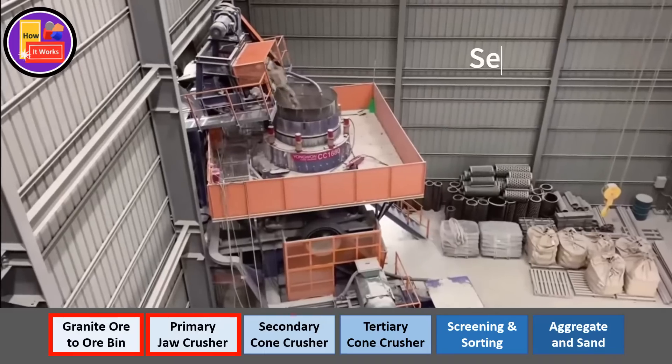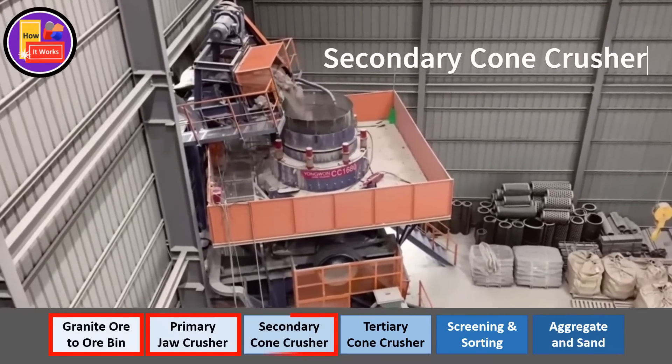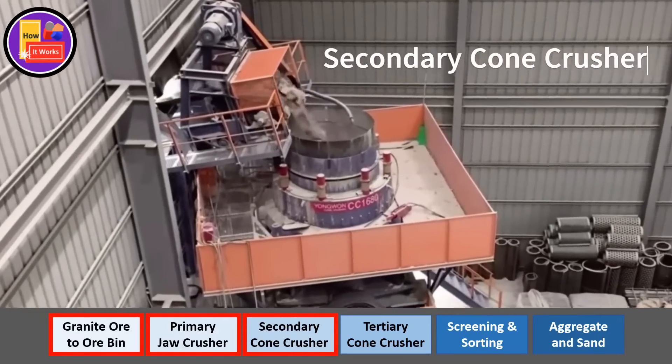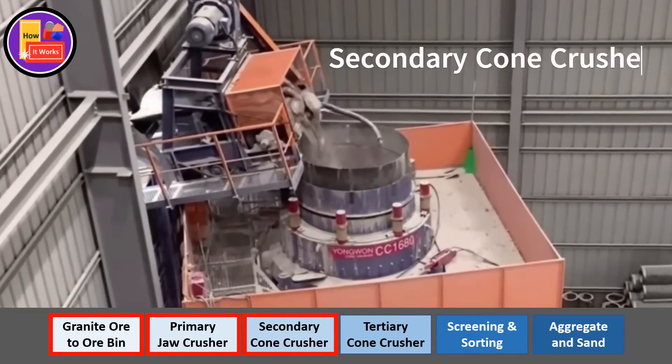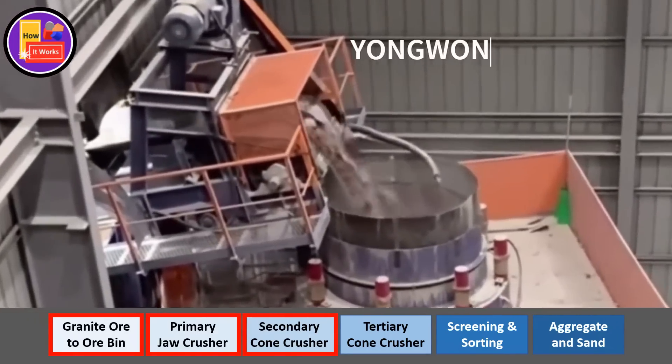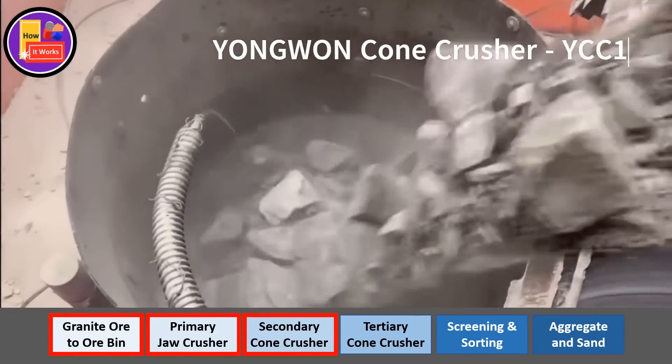A cone crusher will be used as a secondary crusher to reduce the medium-sized stones to smaller-sized stones.